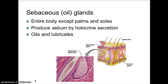If pus-inducing bacteria are also present, then a boil or pimple can result, and that is when we get acne vulgaris — the most common form of acne. It is basically an inflammation of the sebaceous glands, most often seen during adolescence because of hormonal changes during puberty that cause sebaceous glands to become more active.